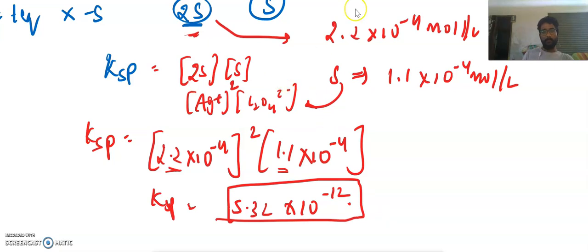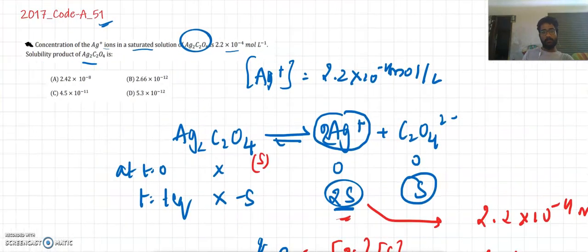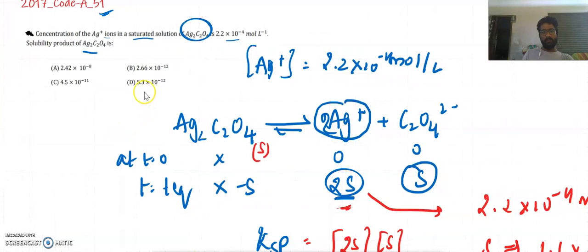We will look for the options now. 5.3 into 10 power minus 12 is our Ksp. I hope this is clear. Thank you very much.